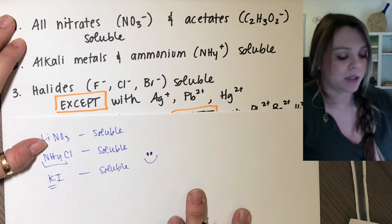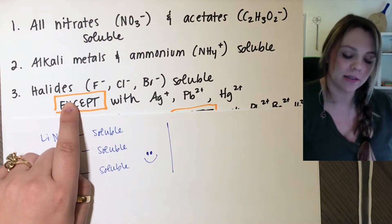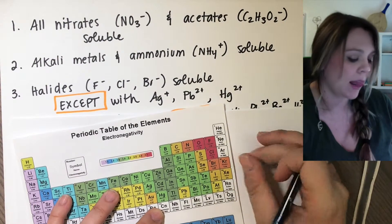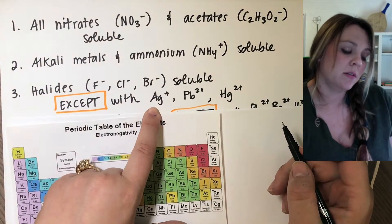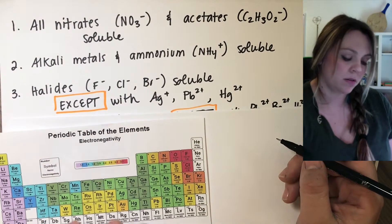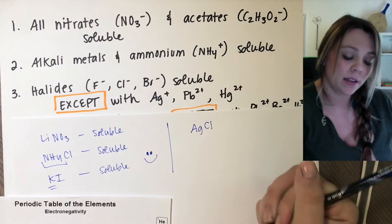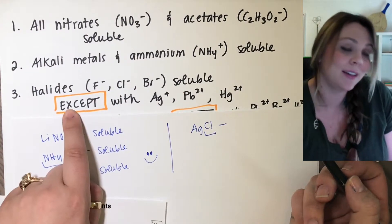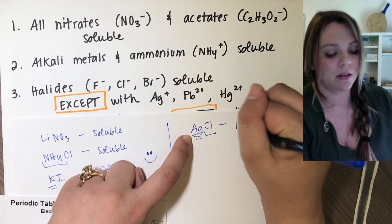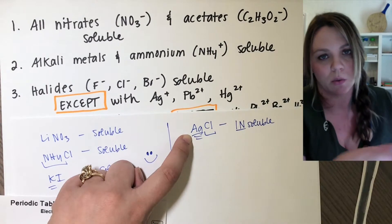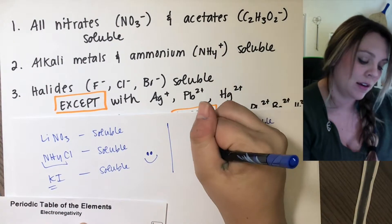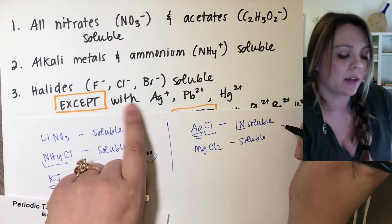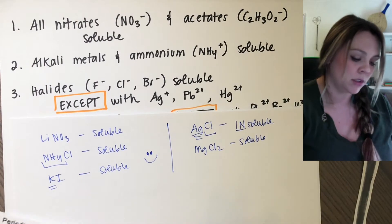Number three is when we start to get into the exceptions. So rule number three, halides, which are your halogens. So the column right next to your noble gases: fluorine, chlorine, bromine, iodine. Those dudes are all soluble unless they're bonded to silver, lead two, or mercury two. So if I had silver chloride, I have a halogen, I have a halide, chlorine, so it should be soluble. However, except it's bonded to silver, so this is insoluble. This will remain a solid in water. It will not dissolve. If I had anything else like magnesium chloride, MgCl2, that's going to be soluble because all of my halides are soluble unless it's bonded to silver, lead, or mercury two.